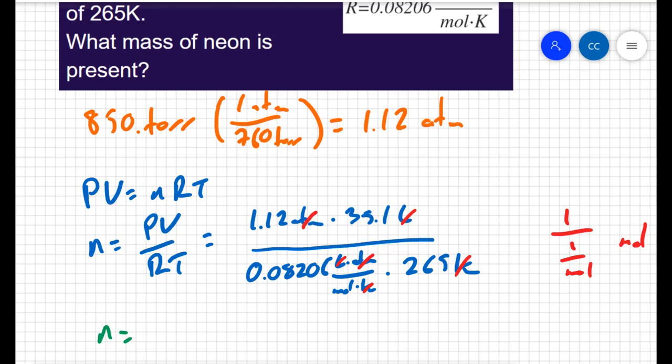And the temperature is 265 kelvin. I can check with my units: atmospheres cancel atmospheres, liters cancel liters, kelvin cancel kelvin. So I'm going to be left with 1 over 1 over moles as my unit, which is the same thing as moles.